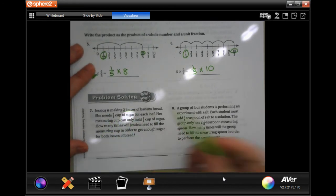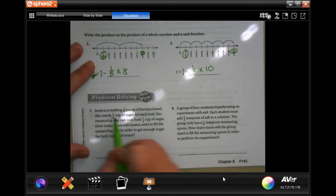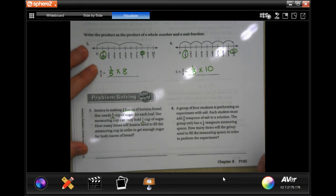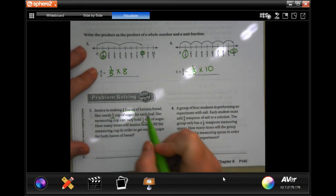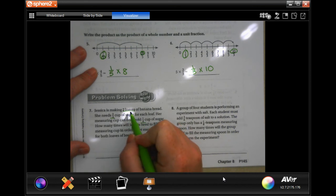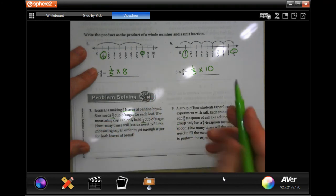Jessica is making two loaves of banana bread. She needs three quarters of a cup of sugar for each loaf. Her measuring cup can only hold a quarter of a cup of sugar. How many times will Jessica need to fill it? All right, well, so for each loaf they need three quarters of a cup and they're making two loaves, so that's going to be...